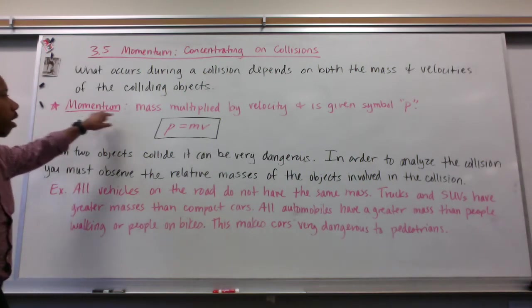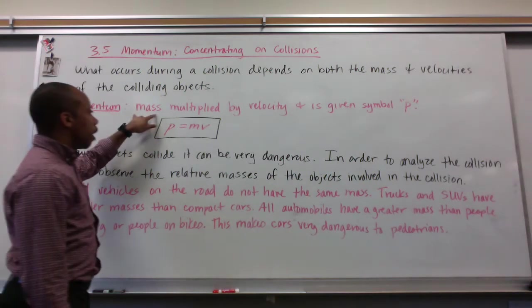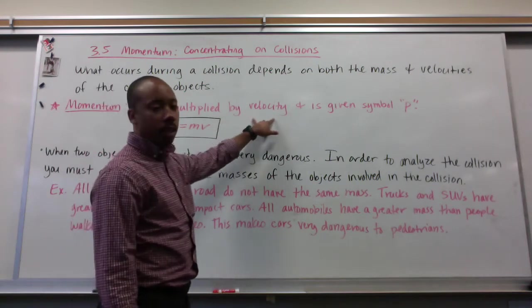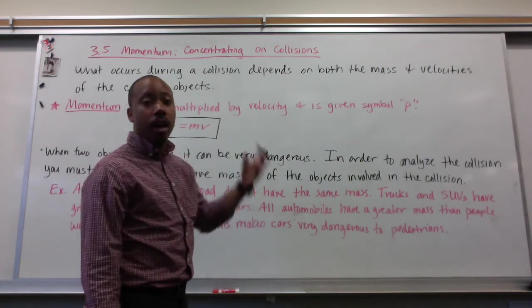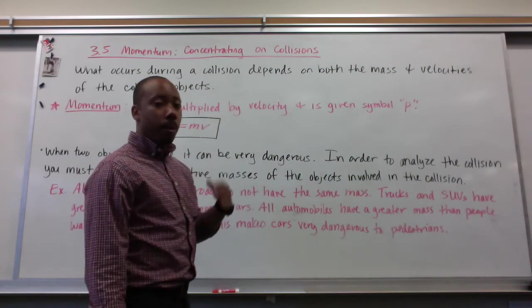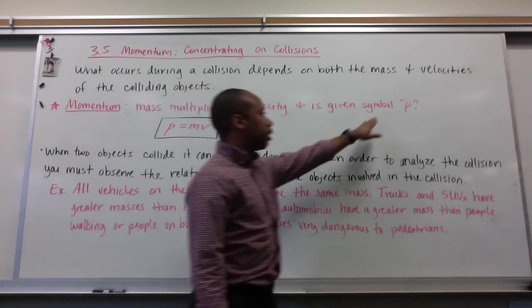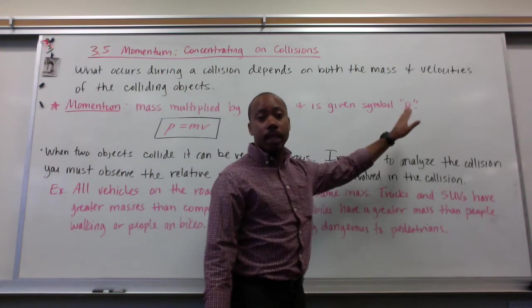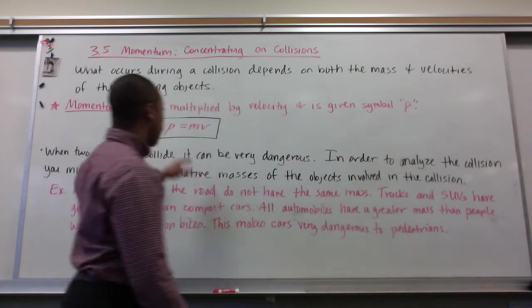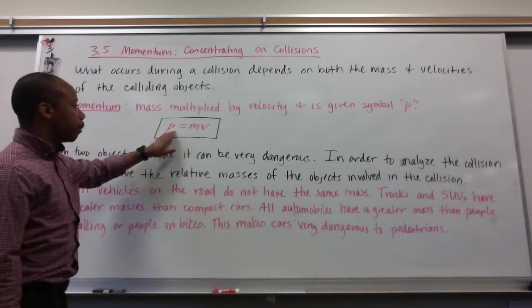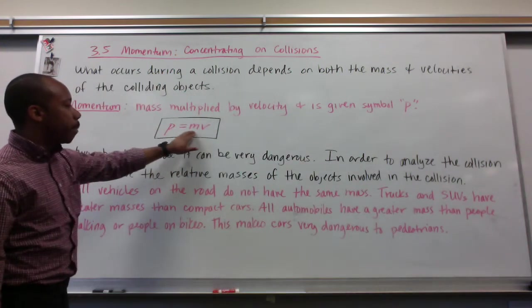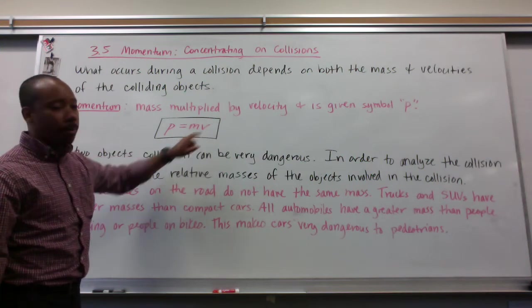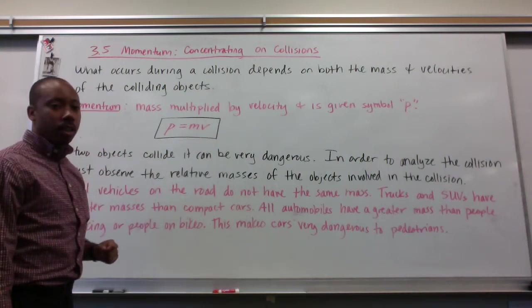Momentum is based on the mass of the object multiplied by the velocity of that object. Momentum is given by the symbol of a lowercase p. The equation is lowercase p equals m times v, which is mass times velocity.